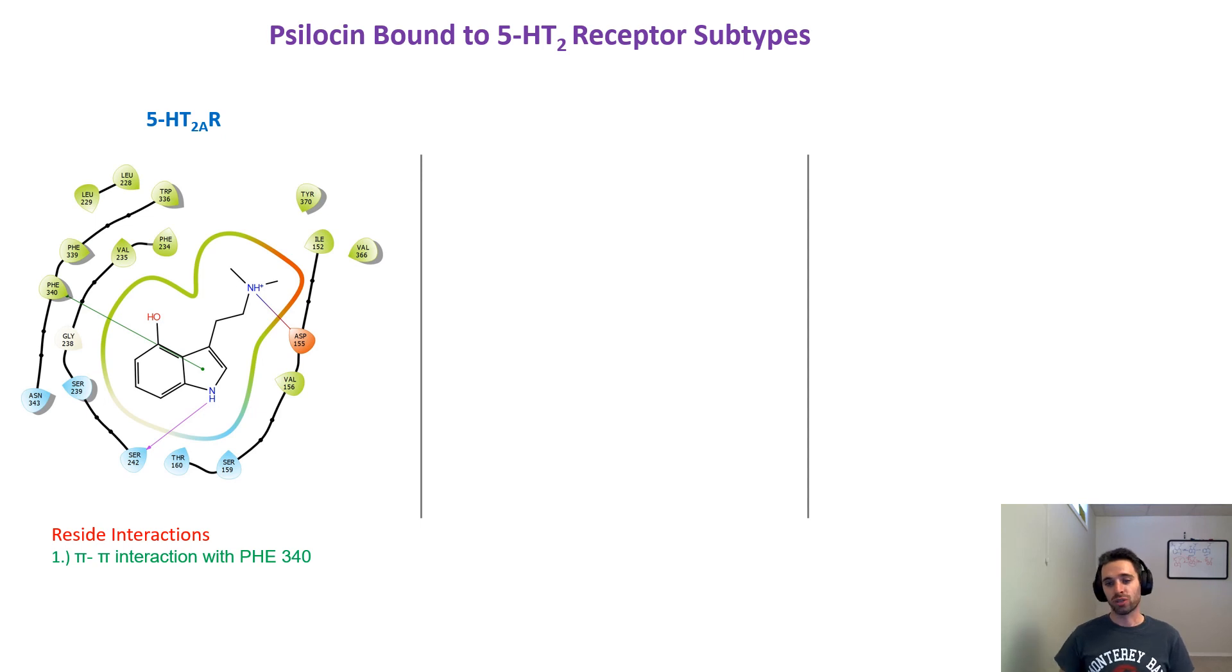The first residue interaction that we'll talk about is the pi-pi interaction between the indole ring and phenylalanine 340. The next interaction is a salt bridge with aspartic acid 155.